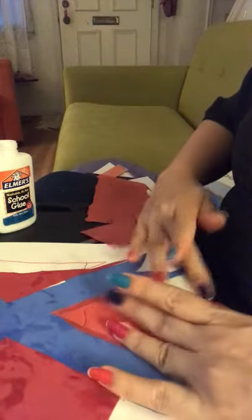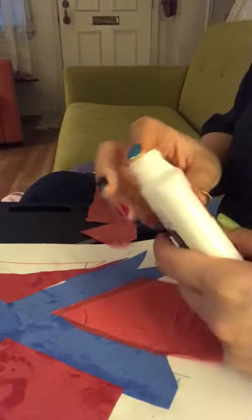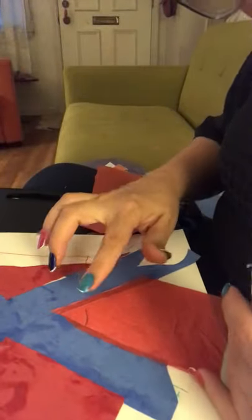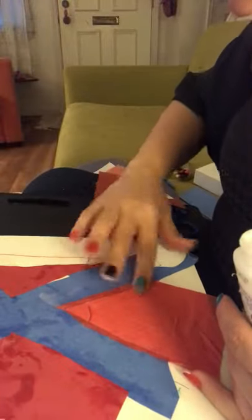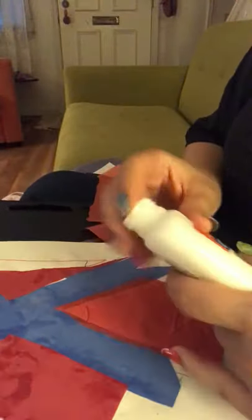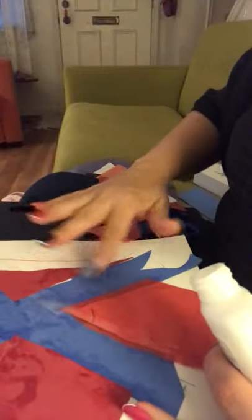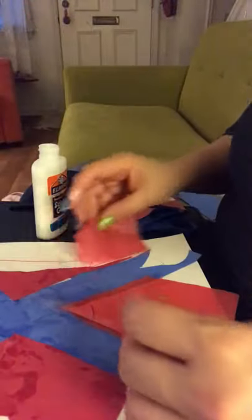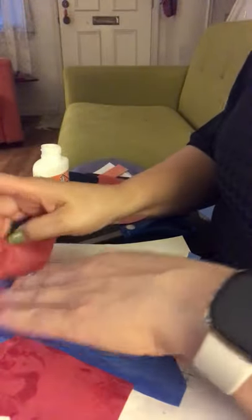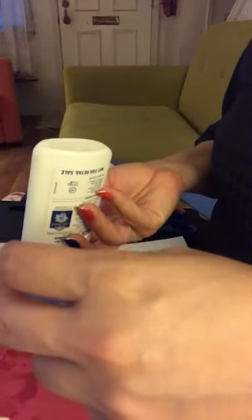The nice thing about working with tissue paper is that, you see my edges are coming up, you can put glue right on top and it'll go through to the other side because it's so thin. I'm going to keep going until I cover up all of the surface area.